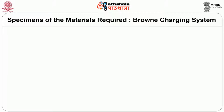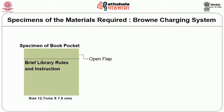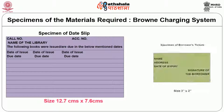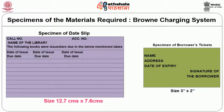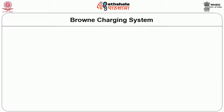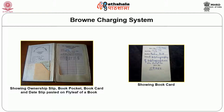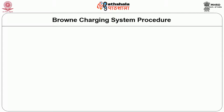The slide shows the various materials required by the Brownie charging system. The specimen of the book pocket is 12.7 x 7.6 cm, and the specimen of the book card is 10.25 cm x 5 cm. The slide also shows the specimen of the date slip and the borrower's ticket. The materials include the ownership label, book pocket, book card, and date slip pasted on the flyleaf of the book.